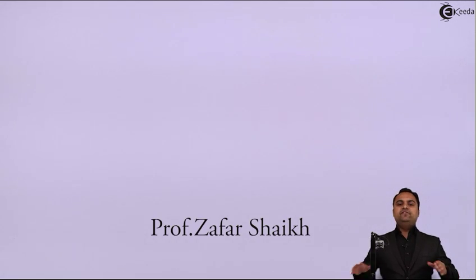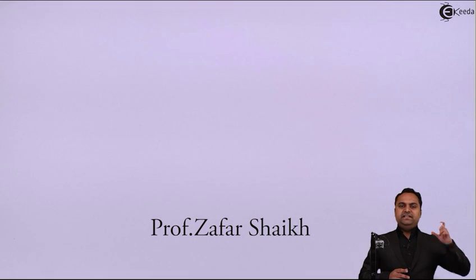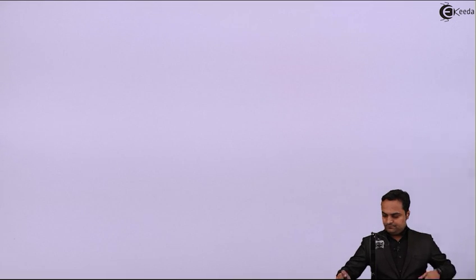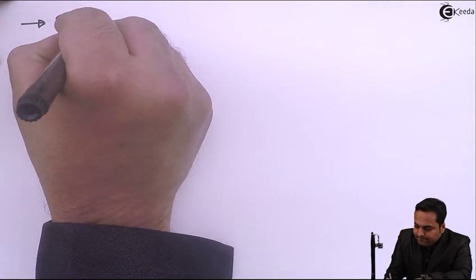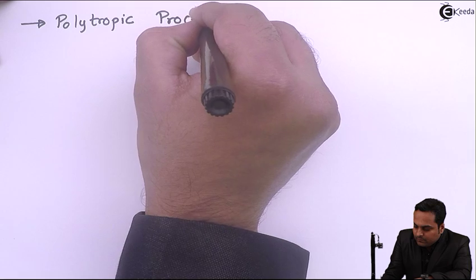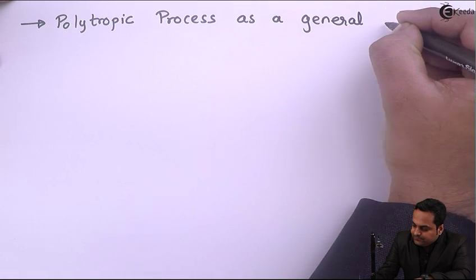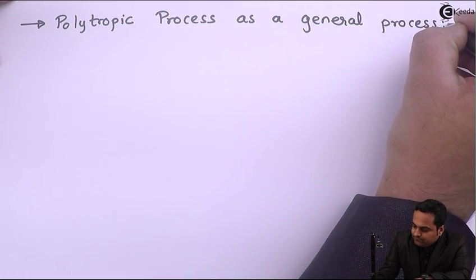Hello friends. In this video we will see that if we take the polytropic process as a general process, then just by changing the value of the polytropic index we get different processes, which are the processes in the first law of thermodynamics for a closed system. Let us get started. The heading will be: polytropic process as a general process.